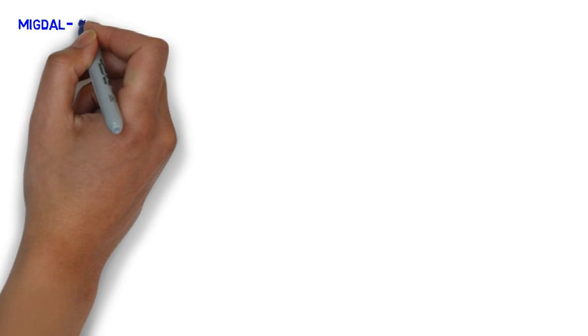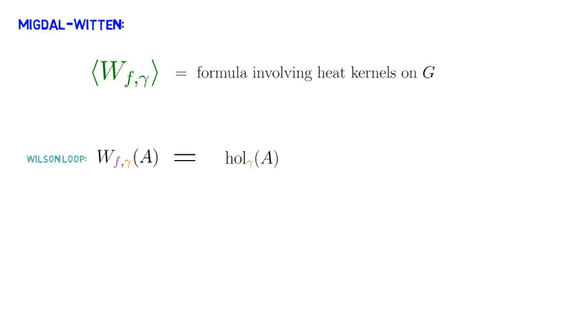In this formulation, expectation values of the basic observables, namely Wilson loops, can be described in terms of explicit formulas involving heat kernels on the gauge group. Recall that a Wilson loop in the continuum theory is a gauge invariant function that takes a connection A, computes its holonomy about a closed loop γ, and then applies the conjugation invariant function F to the resulting group-valued element.